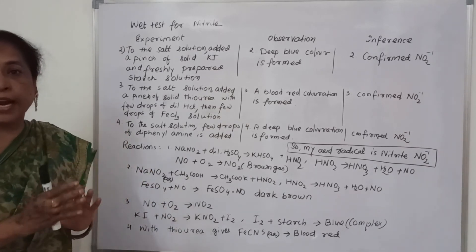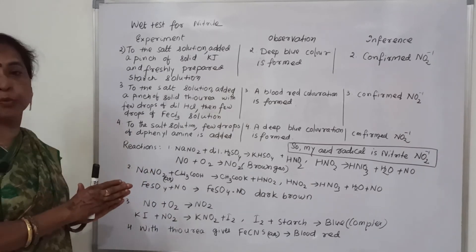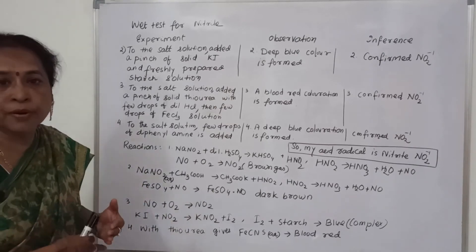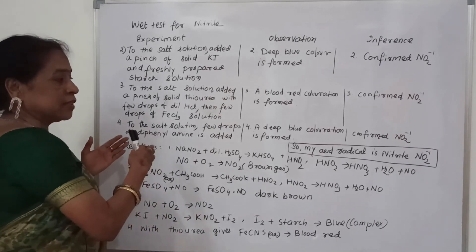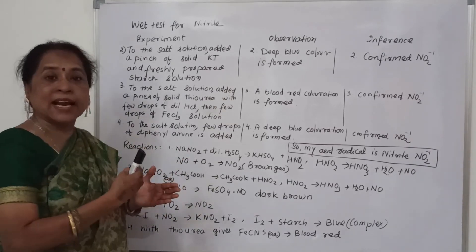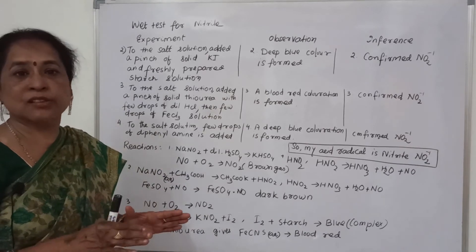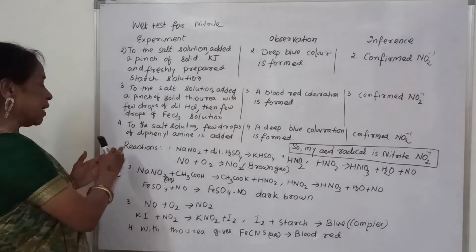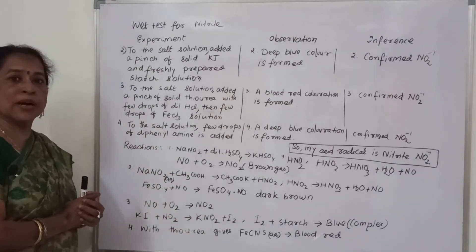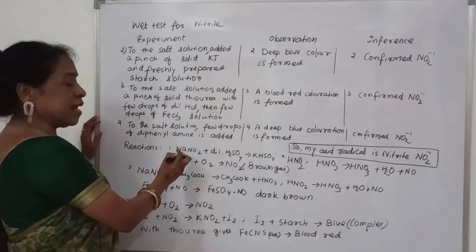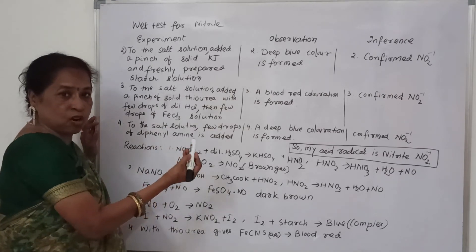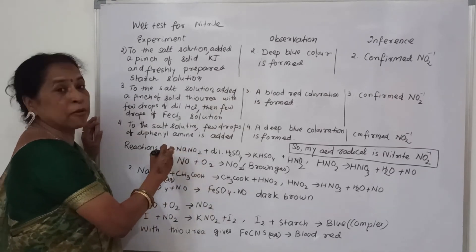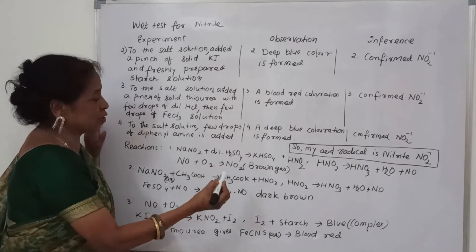So my acid radical is nitrite NO₂⁻. The wet test and dry test are completed. In the dry test, maybe nitrite was established, and by the confirmed wet test, nitrite NO₂⁻ is confirmed. Now let me write the chemical reactions. Let the salt be NaNO₂.